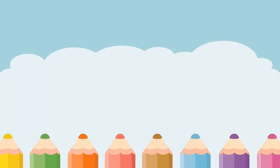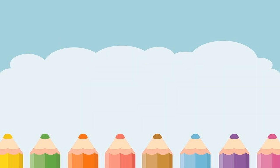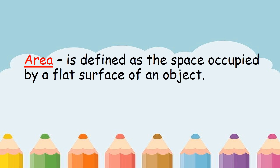For today's lesson we are going to discuss finding the area of a regular figure made up of squares and rectangles. Let us begin our lesson by identifying the meaning of area. Area is defined as a space occupied by a flat surface of an object.